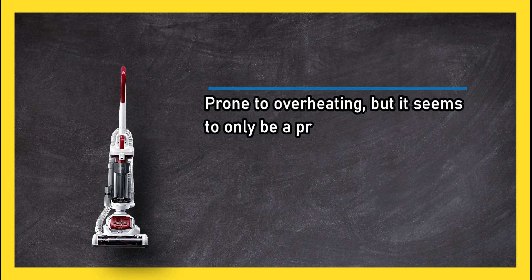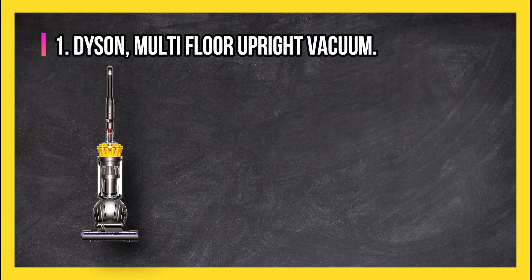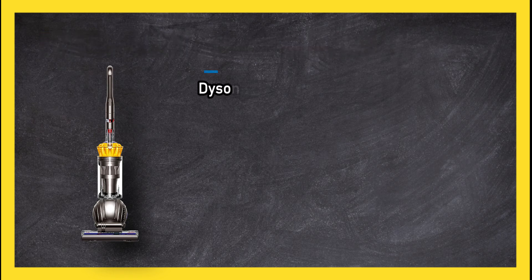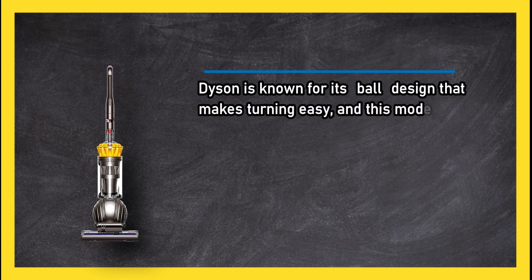At number one: Dyson Multi-Floor Upright Vacuum. Dyson is known for its ball design that makes turning easy, and this model is no different. It is also self-adjusting to go from carpet to wood, tile, or vinyl without missing anything.